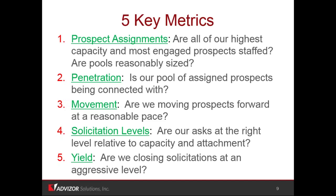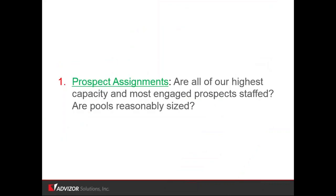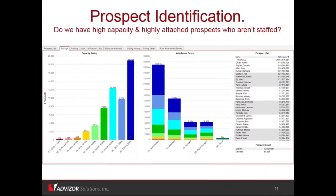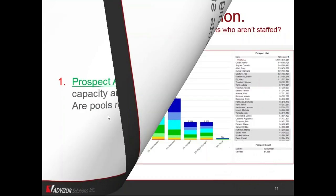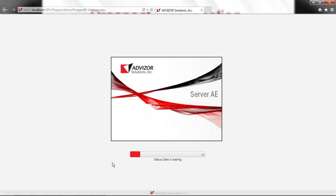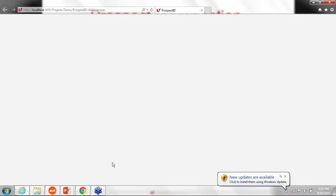So we're going to dive into these and look at some examples. A system like Agilon can track and provide all of the data you need to do this kind of work. So, prospect assignments — looking at this first: are all of our highest capacity, most engaged prospects staffed? Are the pools reasonably sized? This is an example of what we call a project. It's a web version that unpacks a bunch of the data loaded overnight from Agilon and maybe some other sources, pops it into RAM on a server, and I've got a browser interface to it.